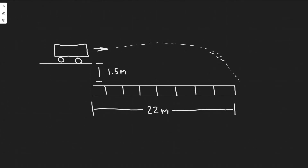In this problem we're told a stunt driver wants to make his car jump over eight cars parked side by side below a horizontal ramp. Part A: with what minimum speed must he drive off the horizontal ramp? The vertical height of the ramp is 1.5 meters above the cars and the horizontal distance he must clear is 22 meters. Part B: if the ramp is now tilted upward so that the takeoff angle is seven degrees above the horizontal, what is the new minimum speed?